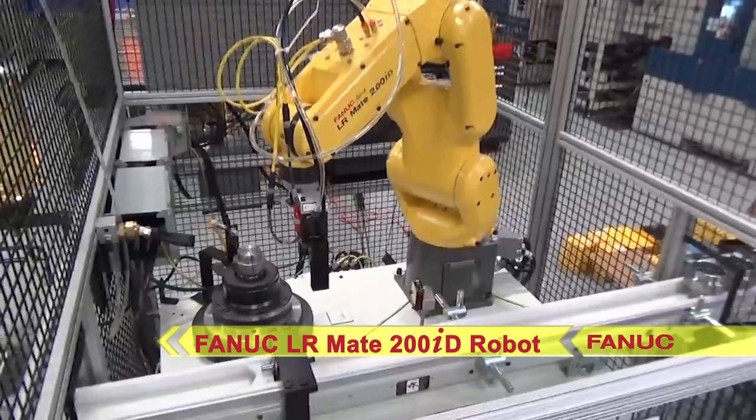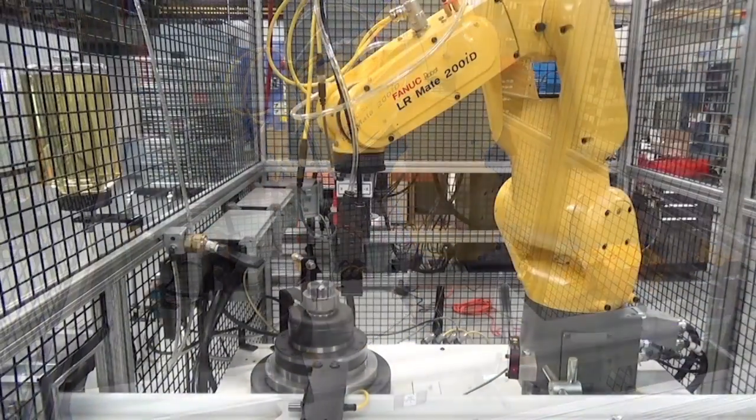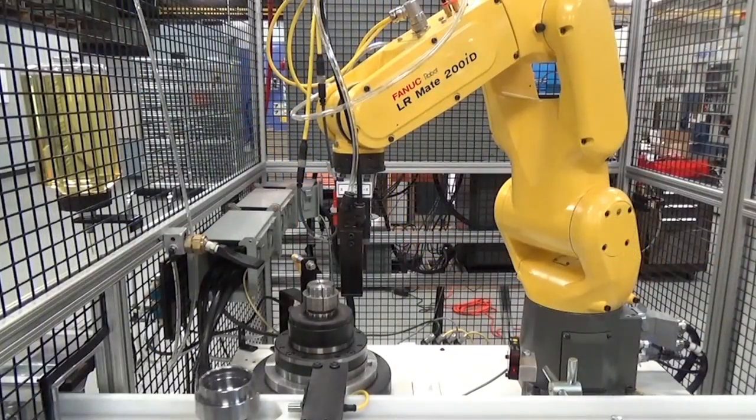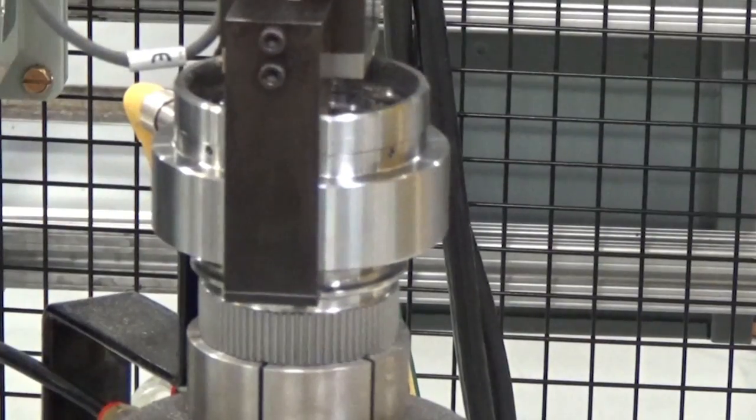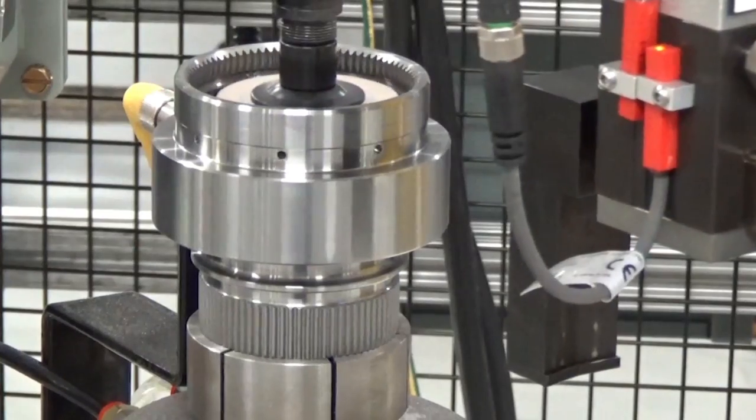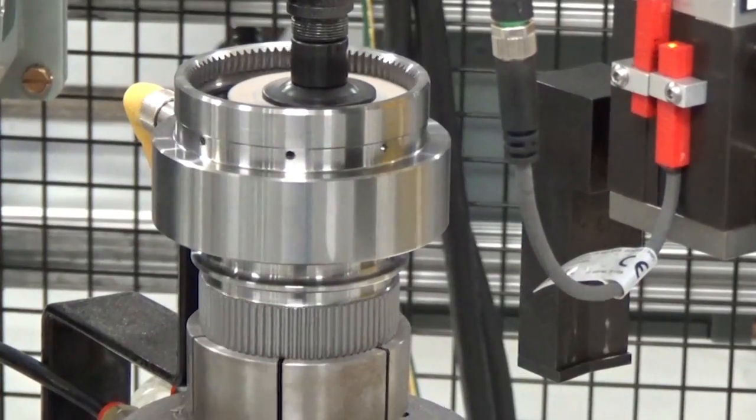The system starts as a proximity sensor alerts the FANUC LR Mate that a part is ready to enter the system. The FANUC robot picks the part and places it onto the collet. The collet clamps the part and the spindle rotates.